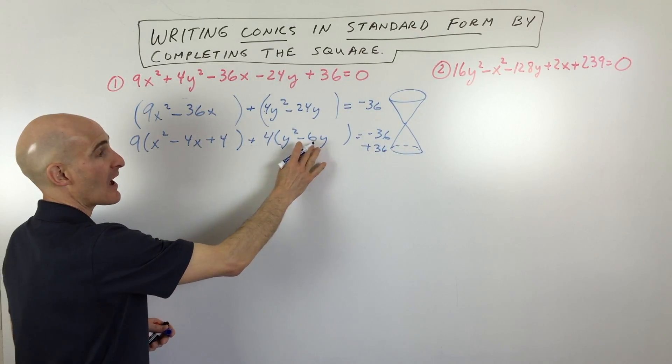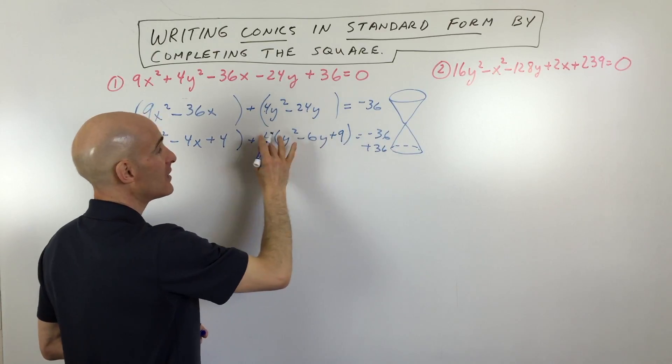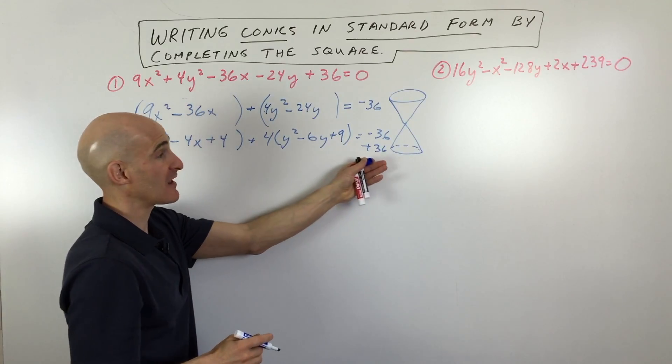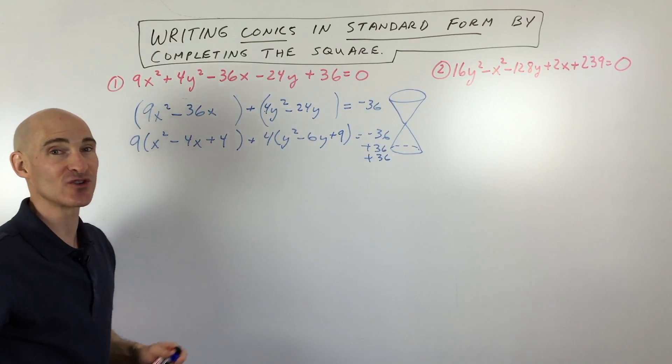Over here, half of negative 6 is negative 3. If we square that, we get 9. 4 times 9 is 36. Again, if I add 36 out of thin air to the left side, I have to add 36 to the right side to keep it balanced. So far so good.